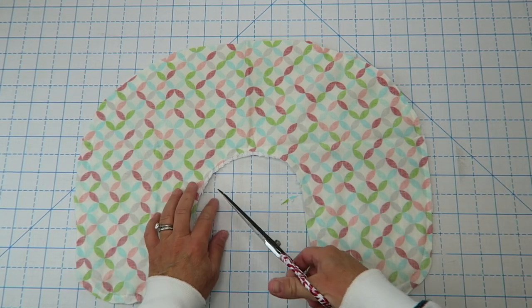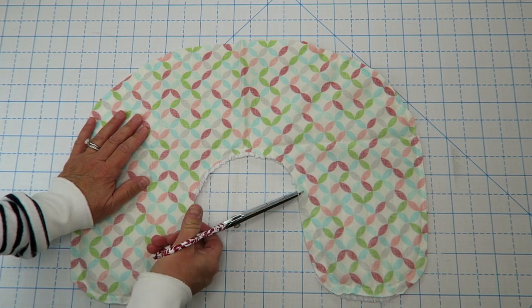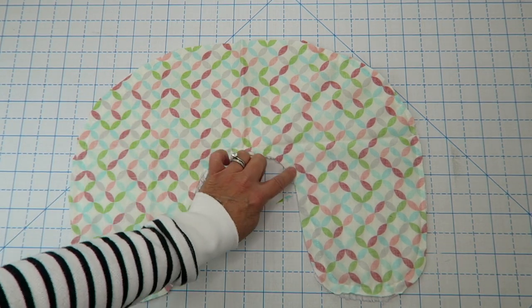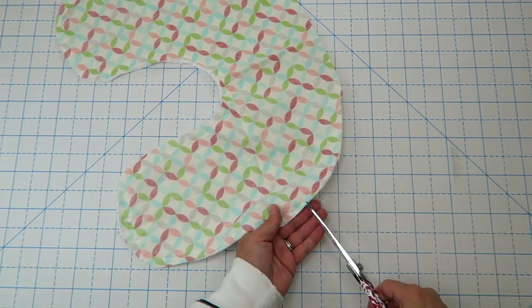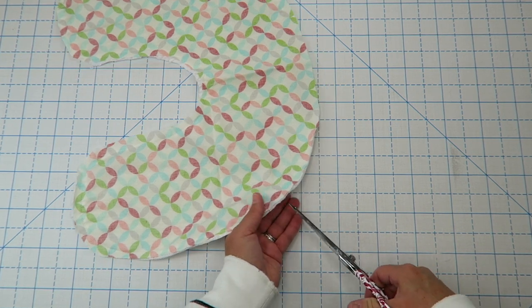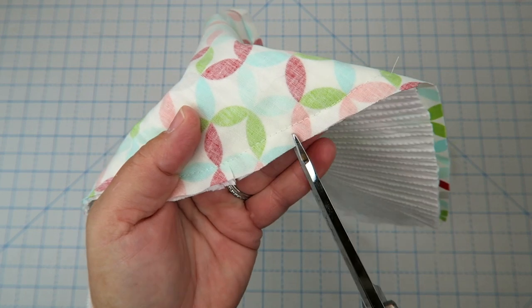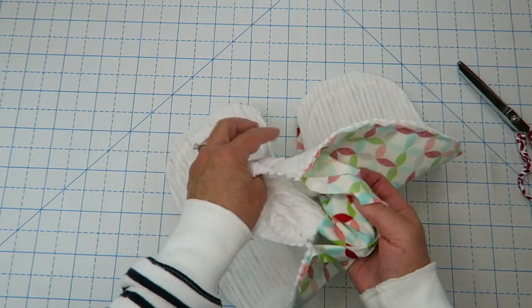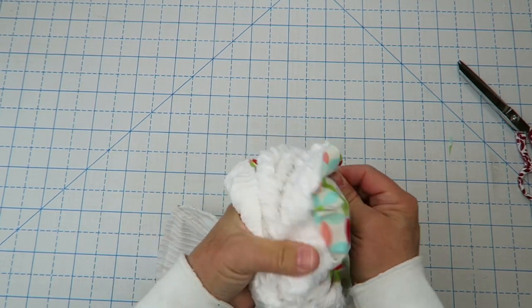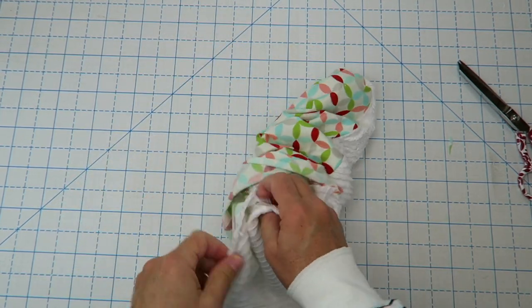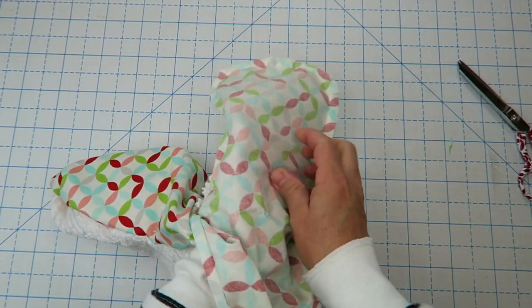So here is our piece we've just finished sewing it around. Next we're going to take our scissors and just do a couple of clips around these inside corners. I'm just cutting into the fabric but not into my stitch line. Then I'll do a few just around these outside corners and it just kind of helps it turn out a little bit cleaner.